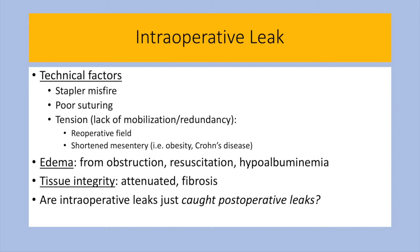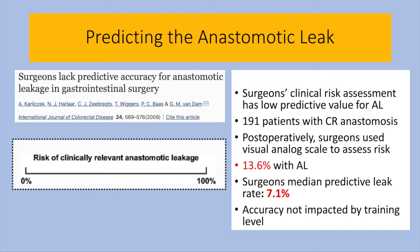Typically, the intraoperative leak is either noted incidentally or when challenging the anastomosis under pressure. Otherwise, the intraoperative leak is just a postoperative leak that was caught early. Interestingly, surgeons are bad at predicting anastomotic leak by using such traditional methods as assessing a palpable pulse or the color of the bowel edges.